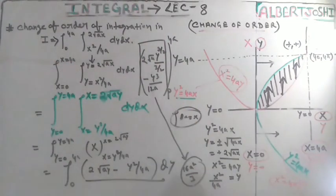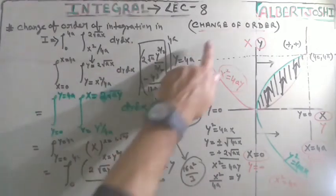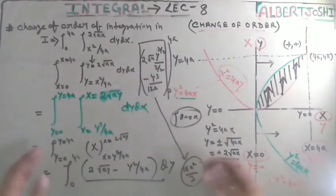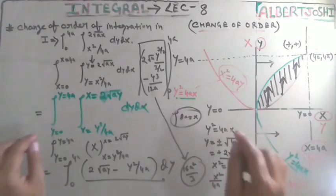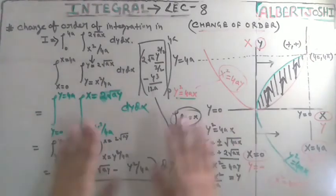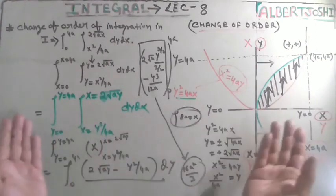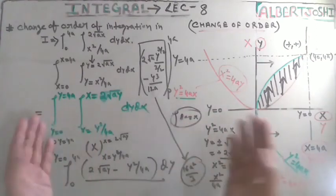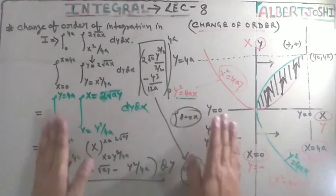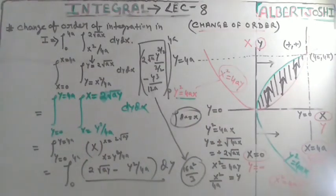This result, 16a squared upon 3, is the same question I solved in lecture number 7 — go to lecture number 7 where I explained this question. This lecture is dedicated only to change of order. If you are facing any problem, just pause the video, listen again, and if you still have a problem you can ask me. Thank you so much.